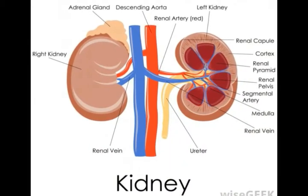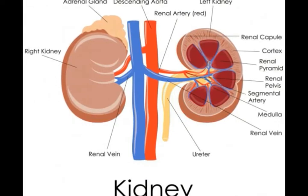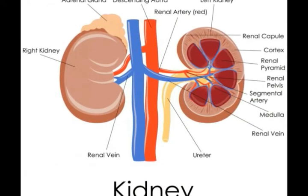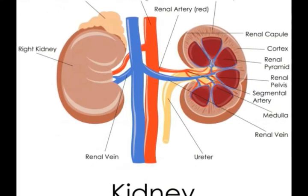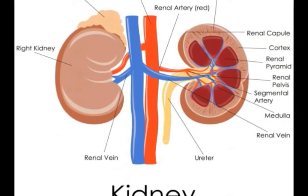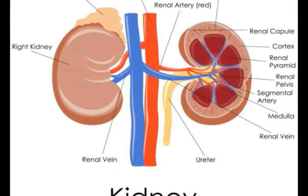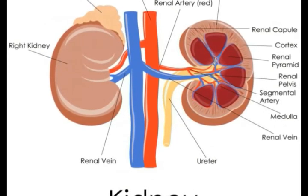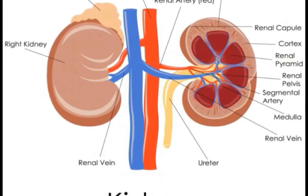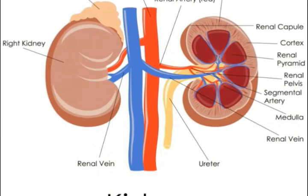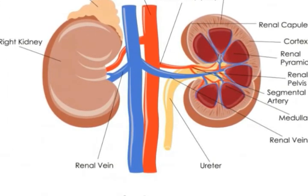Continuous renal replacement therapy, CRRT, is a form of dialysis using a haemodialysis machine, which takes place over 24 hours at a very slow rate. When the kidneys are not functioning properly, CRRT can be used to adjust the blood chemistry. The slow, constant process of CRRT makes it a better form of dialysis for critically ill or injured people, providing gradual and more tolerable regulation of the blood chemistry for these sensitive patients.